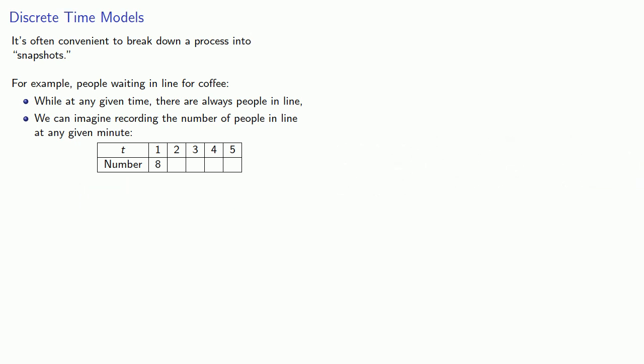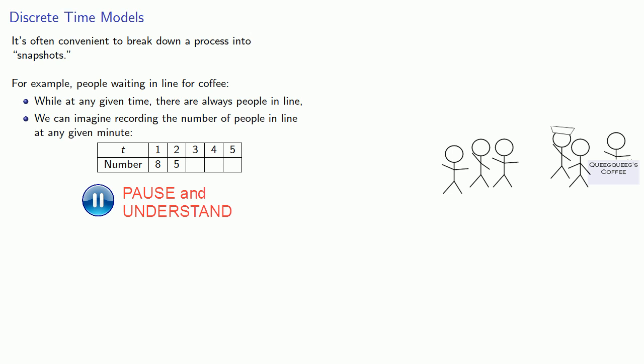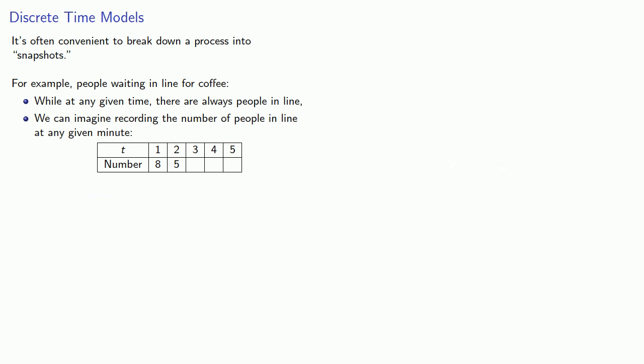We take another picture at t equals two, and now we see there's five people in line. And we can continue to take pictures of the people in line. So at t equals three, we might see seven. At t equals four, we might see seven again. And at t equals five, we might see three.